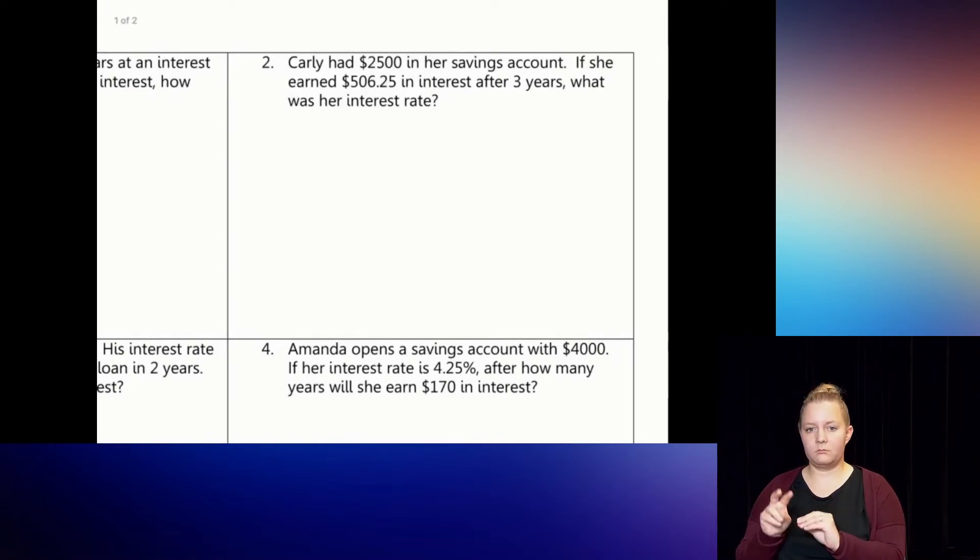Let's look at example two. Carly had $2,500 in her savings account. If she earned $506.25 in interest after three years, what was her interest rate? Well, let's break it down and look at the pieces. She had $2,500 in her savings account already, so that's her P, her principal, her starting amount. If she earned $506.25 in interest, which means that's going to be my I, after three years, so that's my time, what was her interest rate? So the R is the part I do not know.